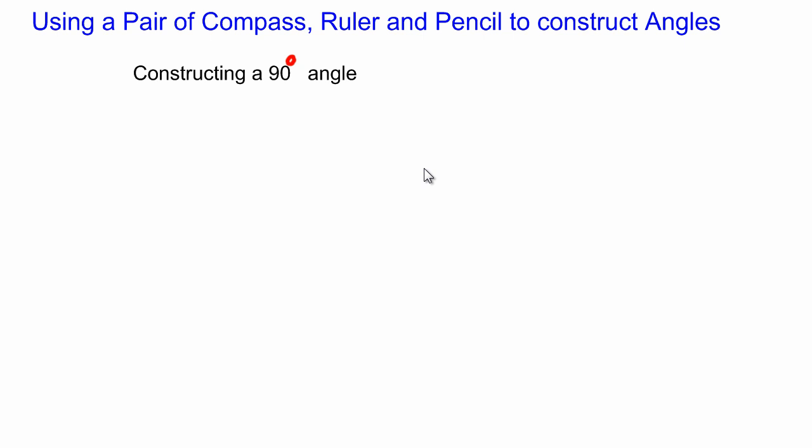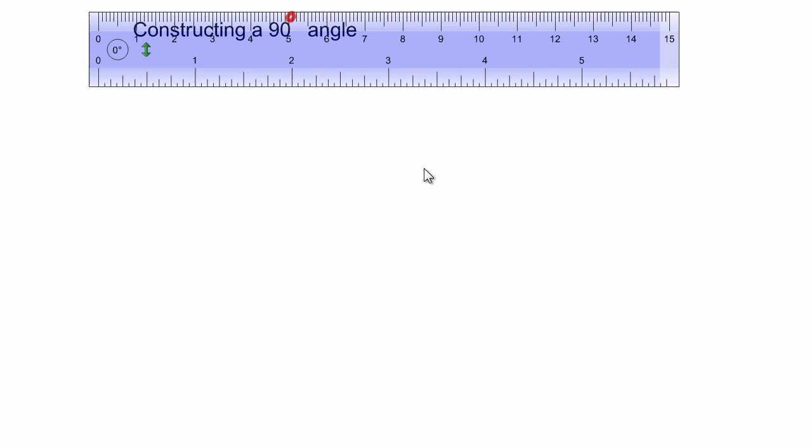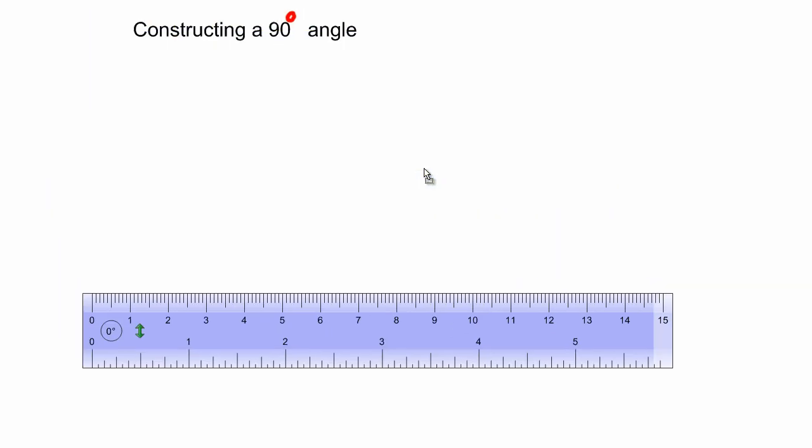In this lesson we're going to be looking at constructing a 90 degree angle. Let's just quickly look at that. First I'm going to take out my ruler. This is my ruler.